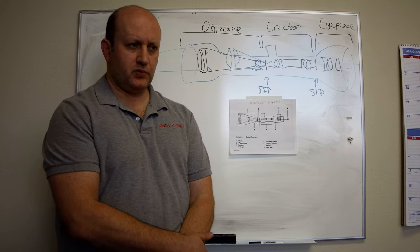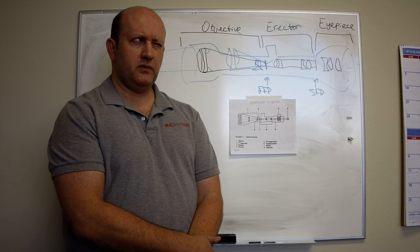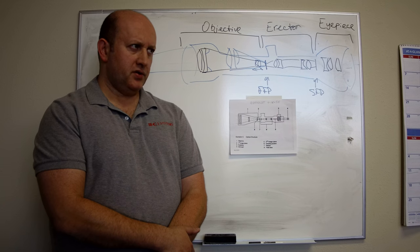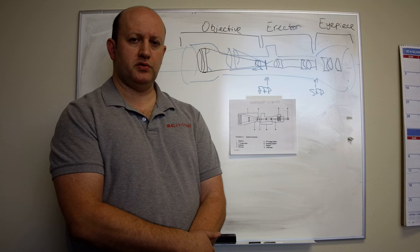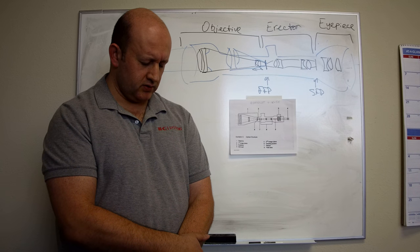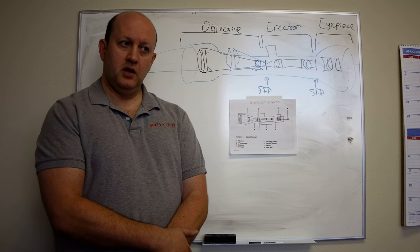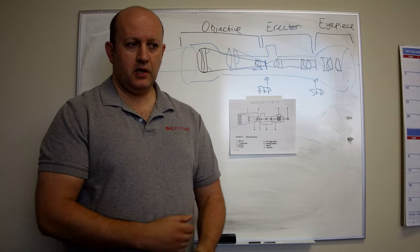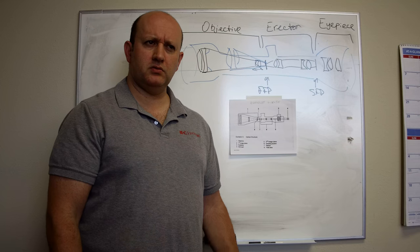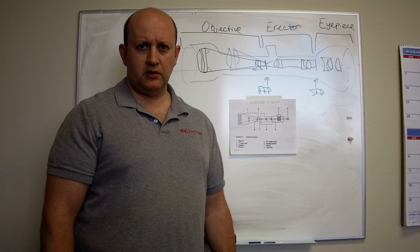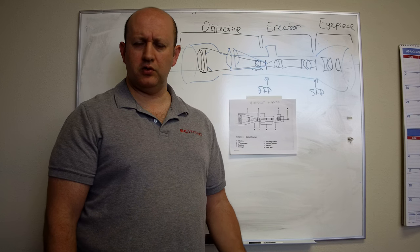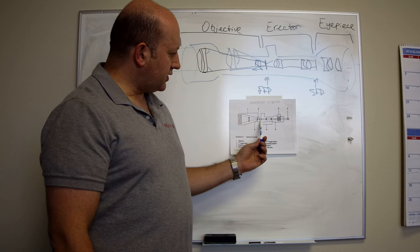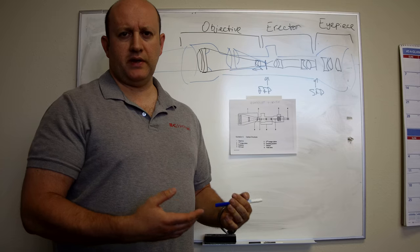I'll give you an example with SIG scopes. SIG made a 3-18x44 Tango 6. The Gen 1 scope was pretty long. I tested it. It was a really nice scope. It weighed 30-32 ounces, something like that. For the Gen 2, they went with a much shorter design. I think it's a 3-18x44 that is 12 inches long. But it got shorter, yes, but it got heavier. Now it's 38 ounces. Every time people talk about scope weight, they go, 'Oh, larger tube makes it heavy.' The tube itself is really, really light. The weight difference between a 30 and a 34mm tube, the aluminum densities are well known. It is really nothing.